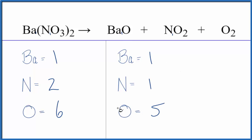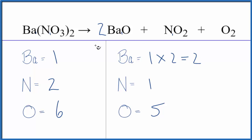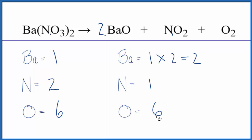This is a little challenging. It would be really nice if we could get an even number of oxygens on the product side. If we put a coefficient of two in front of barium oxide, we'd have two barium atoms, and two plus two plus two gives us six total oxygen atoms. So the oxygen atoms are balanced.